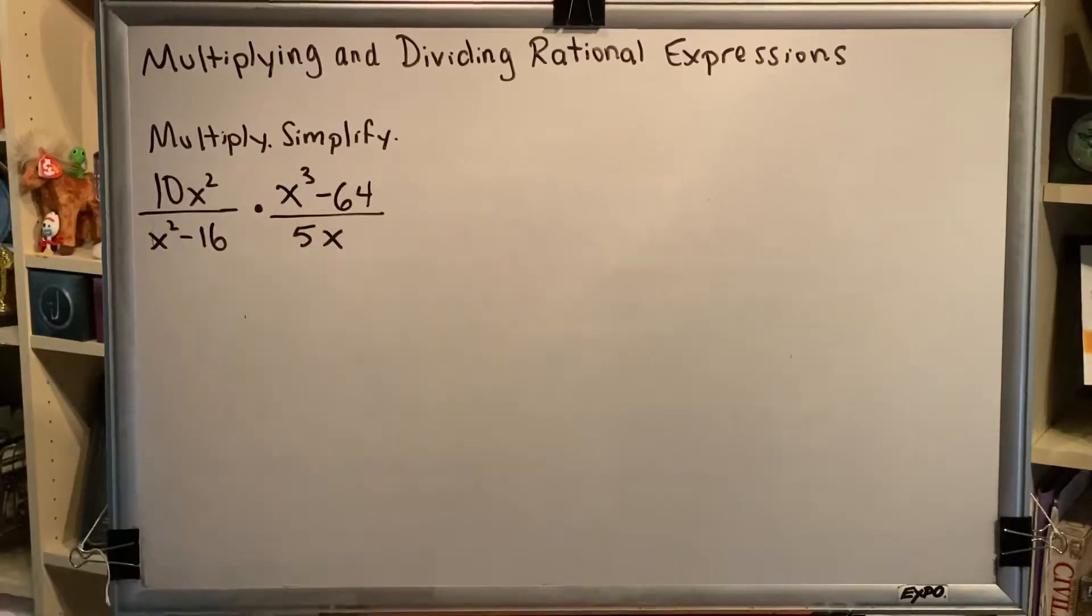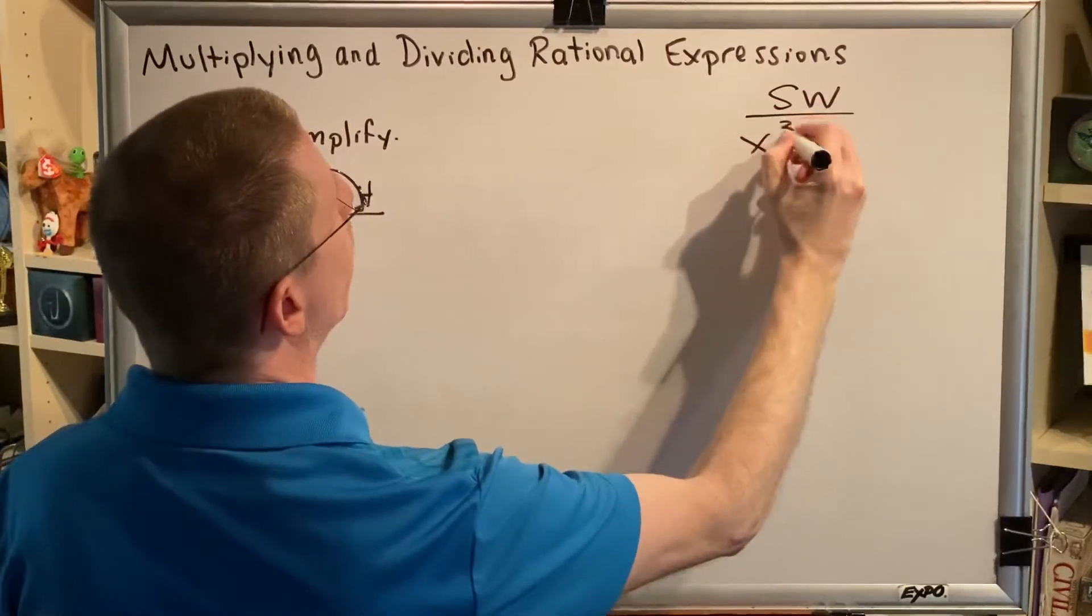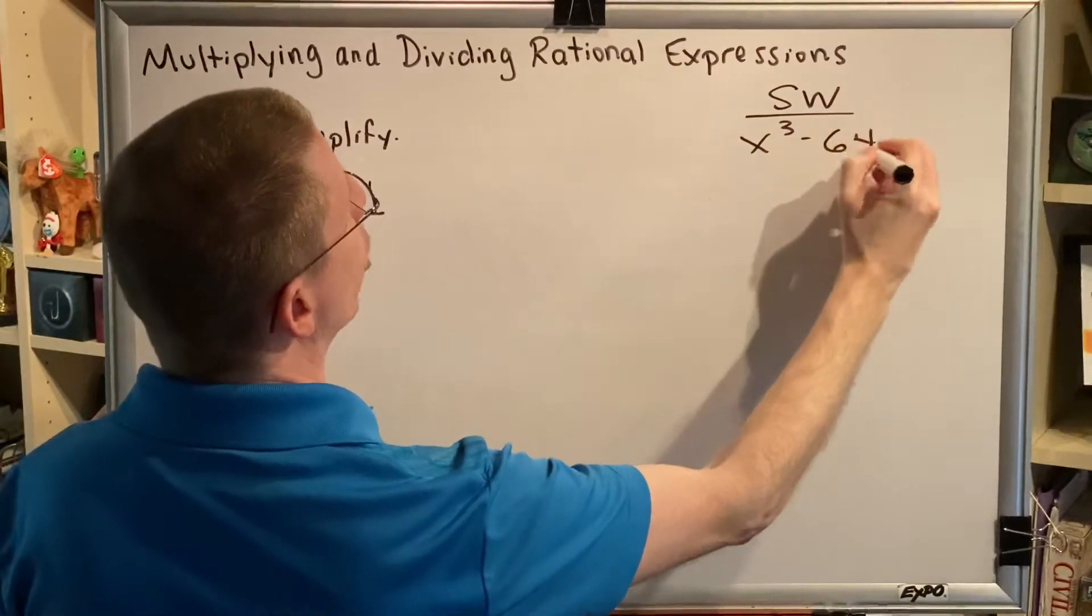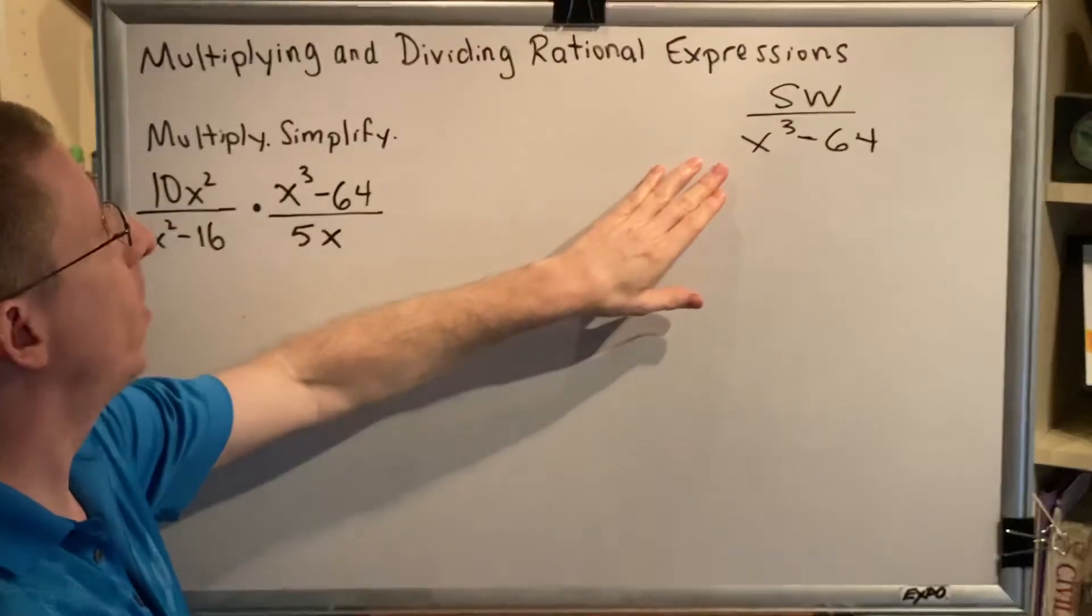So let's start with this x³-64, and let's do this in our side workspace. x³-64. Let's go through the three steps of factoring. First, descending order. This is already in descending order.